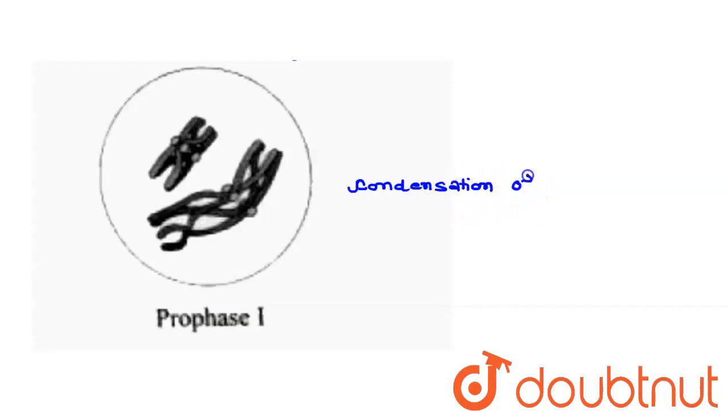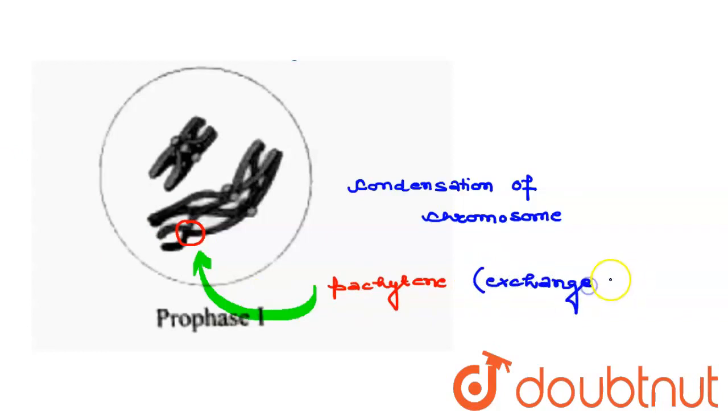so meiosis involves the condensation of chromosomes. You can see here the non-sister chromatids which are crossing over. This is basically the pachytene stage of prophase 1, and crossing over means the exchange of genetic material.